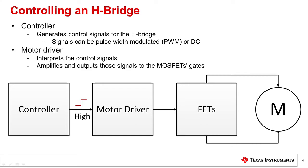A motor driver interprets the control signals and amplifies them to control the FETs found in the H-bridge. The FETs are turned on or off depending on the polarity of the control signal the FETs are connected to. By controlling when and what FETs are turned on or off, a flow of current to the motor can be controlled.